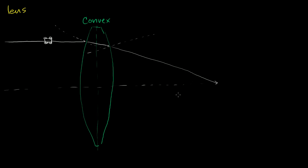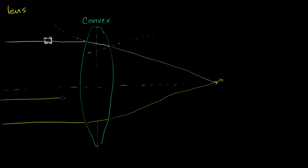There is a point out here such that whenever I take any ray parallel to the principal axis of the lens, it will be refracted through the lens to that same point. So here a ray gets refracted a little, then a little more, and converges to that point. Another parallel ray likewise gets refracted and goes to the same point. These are sometimes called collimated rays — rays of light that are roughly parallel — and they all converge at this point on the other side of the lens.